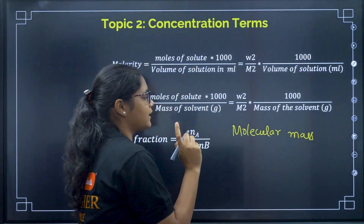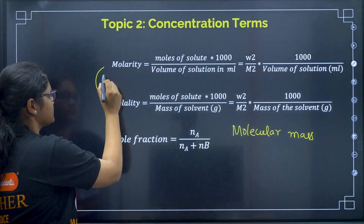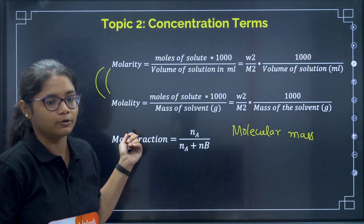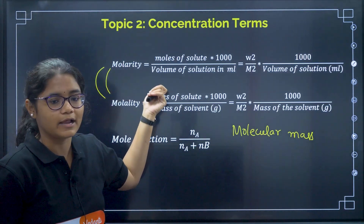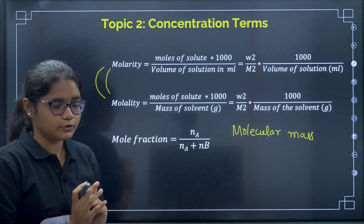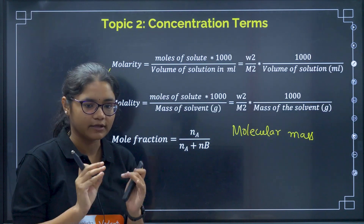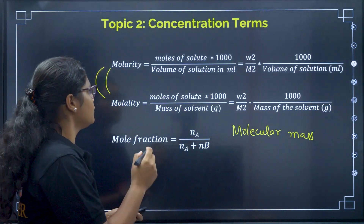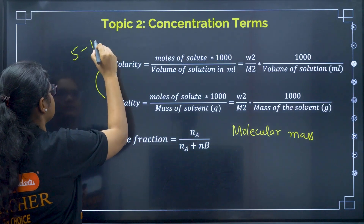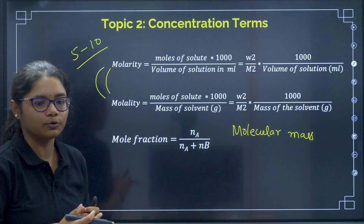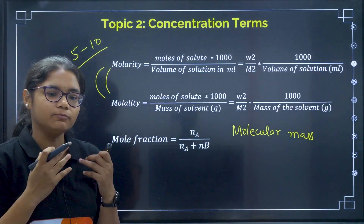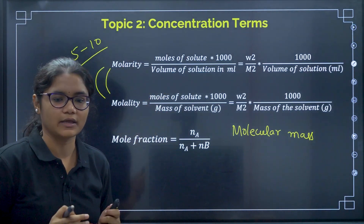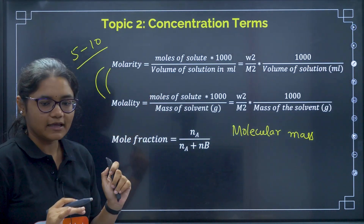One more important thing to remember is the interconversion between molarity and molality — if molarity is given, how to calculate molality, and vice versa. You can practice around 5 to 10 questions from this topic using NCERT book examples or previous year questions. No need to give more time for this; just formula-based questions.